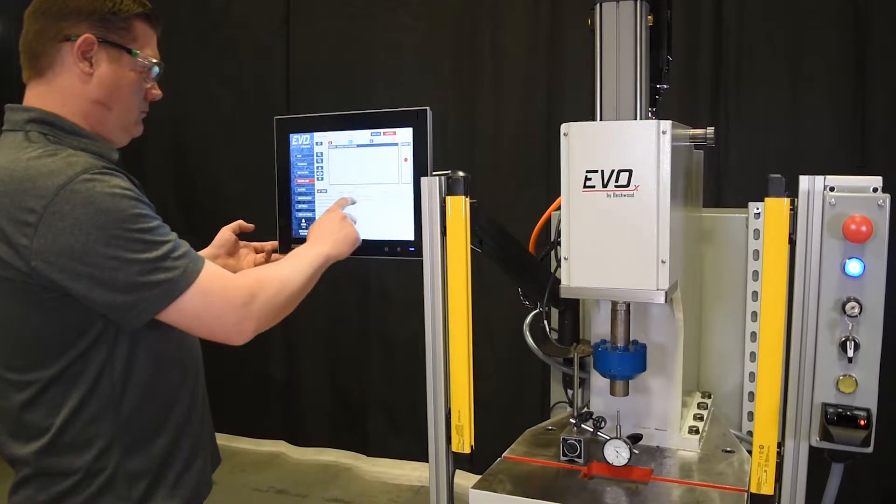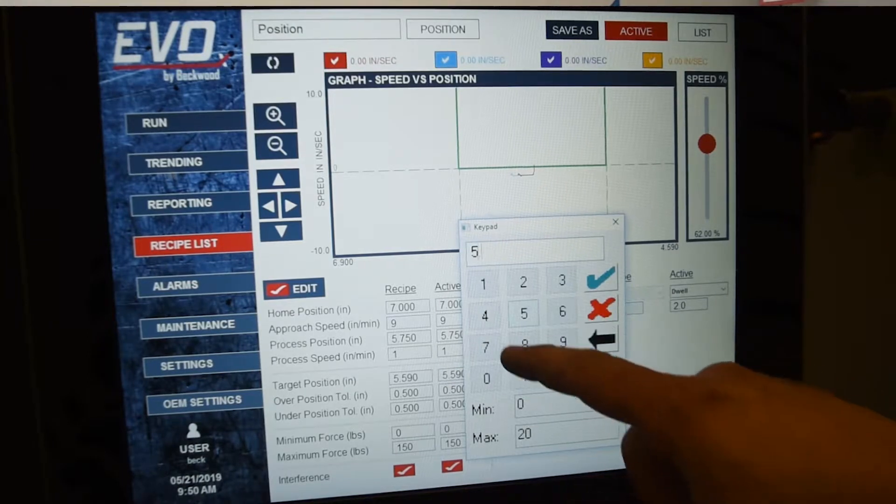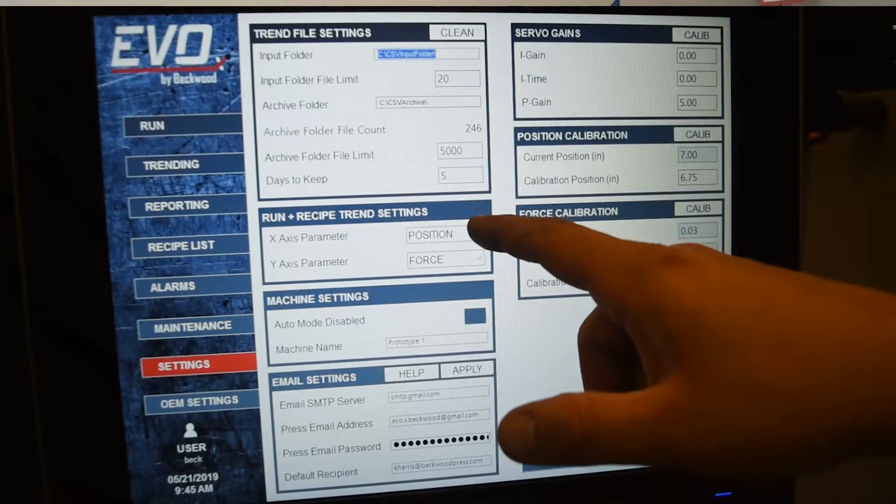It's meant for many light assembly applications that require a little higher precision than what traditional hydraulic presses or even in some cases mechanical presses can offer.